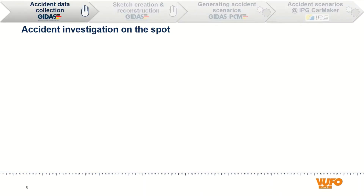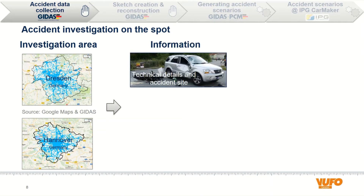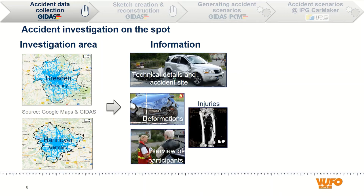Let's start with the first step: the accident investigation on the spot. The accident investigation is performed within the framework of GEDAS, the largest project for the detailed analysis of traffic accidents with personal injuries in Germany. There are two investigation teams in GEDAS with locations in Dresden and Hannover. On site, technical details of the involved vehicles and information of the environment has to be collected. The formations and end positions of the vehicles are also important. In addition, we conduct interviews with the participants of the accident and document their injuries.